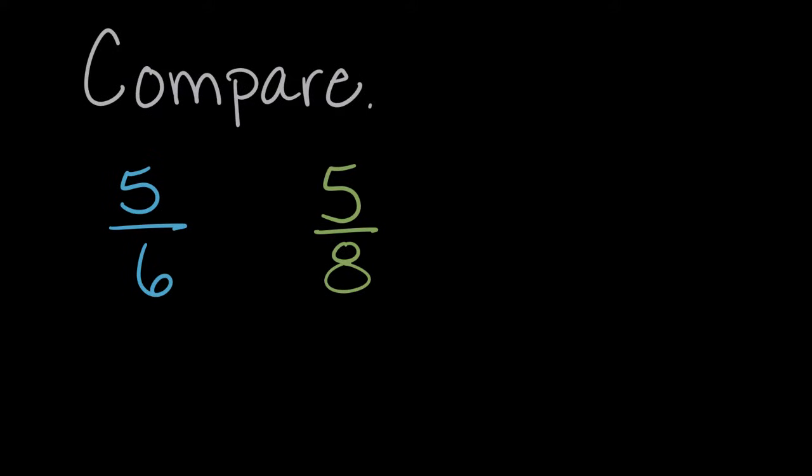Let's compare five sixths and five eighths. Let's think about what they mean. Five sixths means five out of six pieces. If you have a whole, let's say a whole cake, and you cut it into six pieces, five sixths is five of those six pieces.